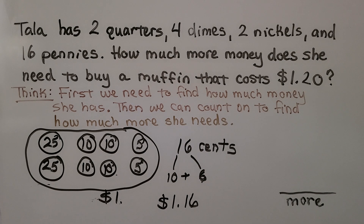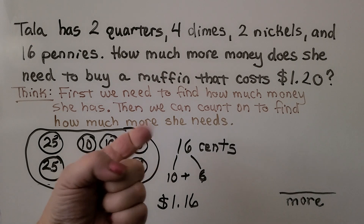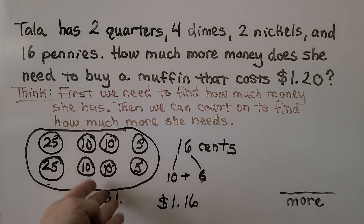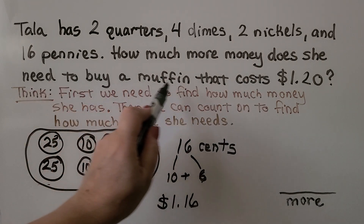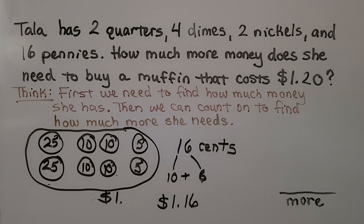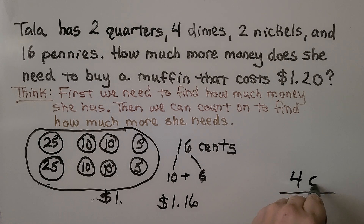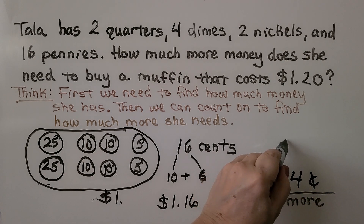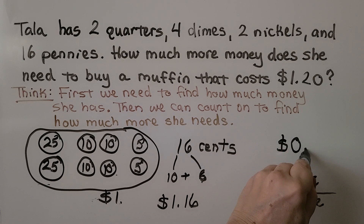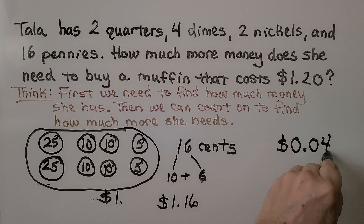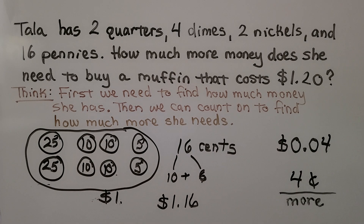We count on from 16: 17, 18, 19, 20 — that would be four more cents. So the question is how much more money does she need to buy a muffin that costs $1.20? She needs four cents. We can also write four cents as $0.04, but it might be quicker to write it as 4 cents.